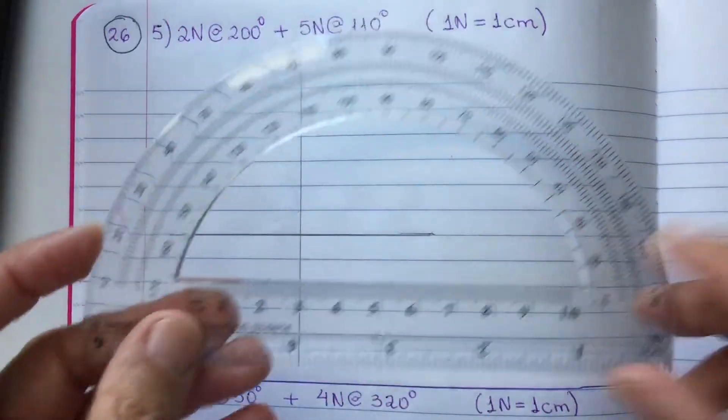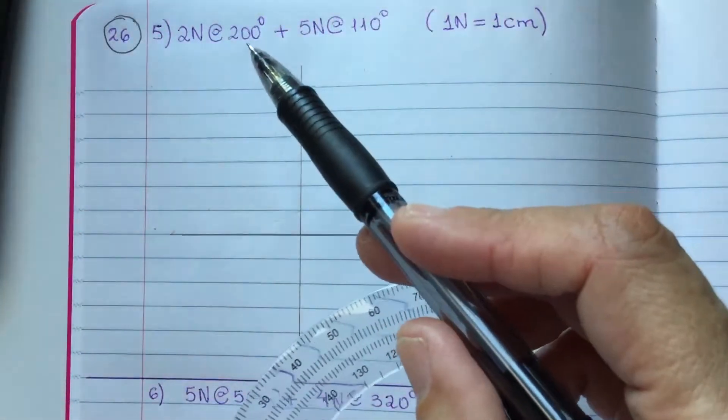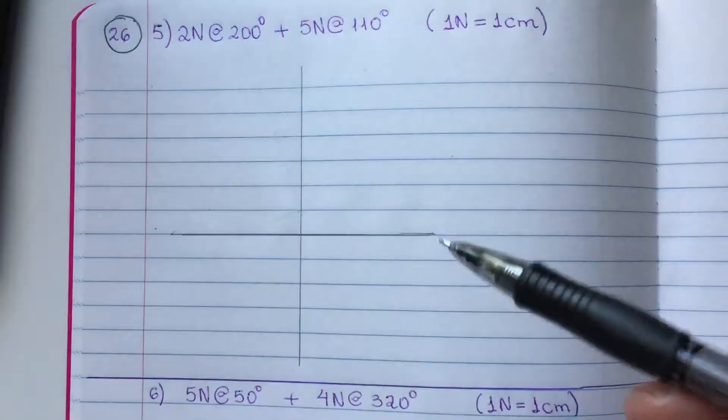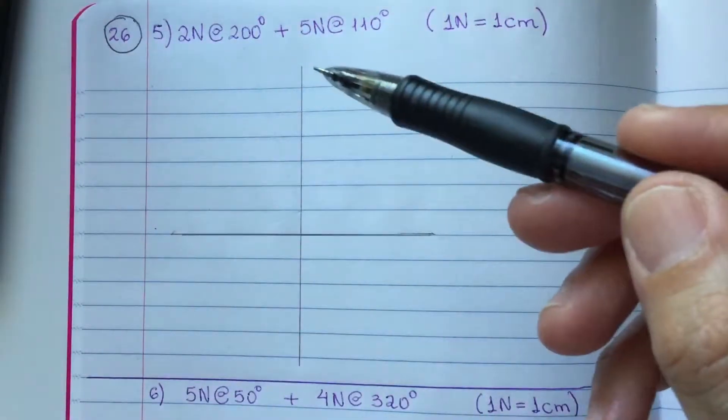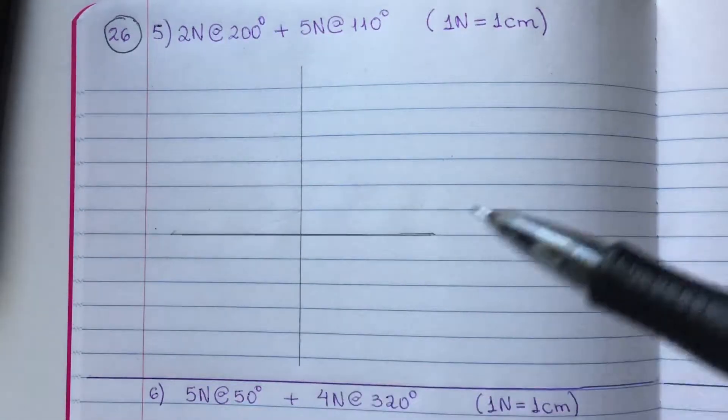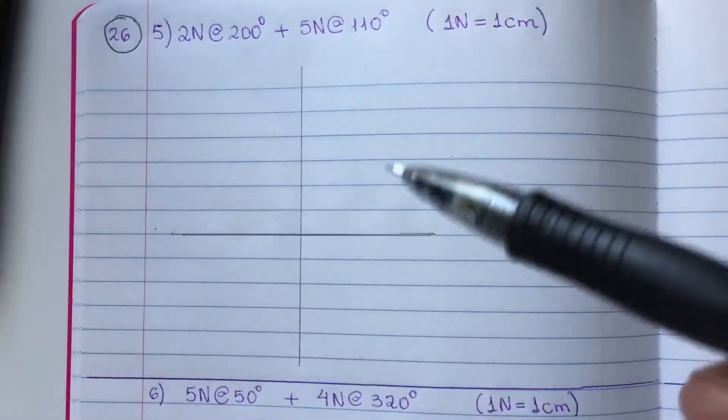You need a protractor to find 200 degrees. To do that, the basic angles of these grids are 0, 90, 180, 270, 360. One complete cycle.